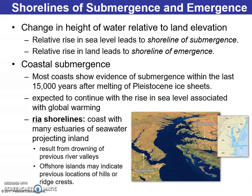A change in the height of water relative to land elevation drives relative rise in sea levels, creating a shoreline of submergence, while a relative rise in land creates a shoreline of emergence. Most coasts show evidence of submergence in the last 15,000 years after melting of the Pleistocene ice sheets, which we discussed last chapter. The evidence for when the Pleistocene ice age occurred and its cyclical nature is complex — we think it goes back three and a half million years, with many different theories covered last chapter.